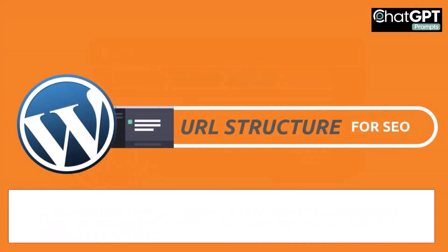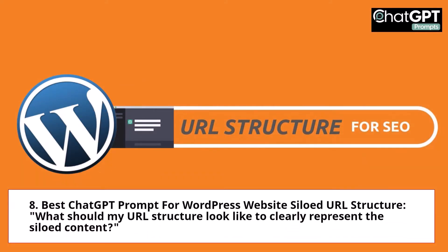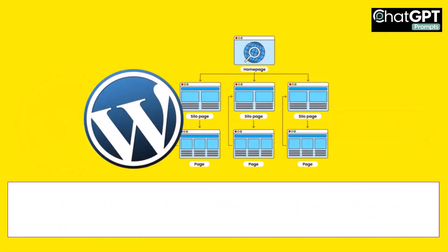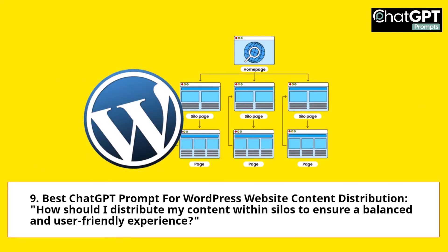8. Best ChatGPT Prompt for WordPress Website Siloed URL Structure: What should my URL structure look like to clearly represent the siloed content? 9. Best ChatGPT Prompt for WordPress Website Content Distribution: How should I distribute my content within silos to ensure a balanced and user-friendly experience?